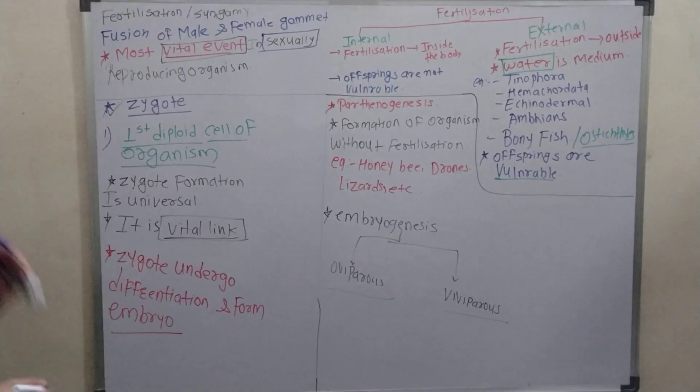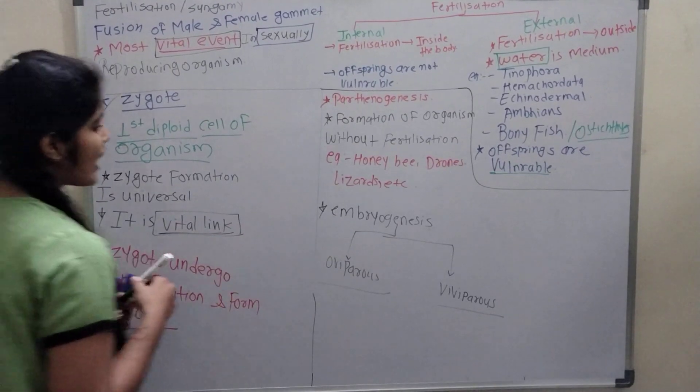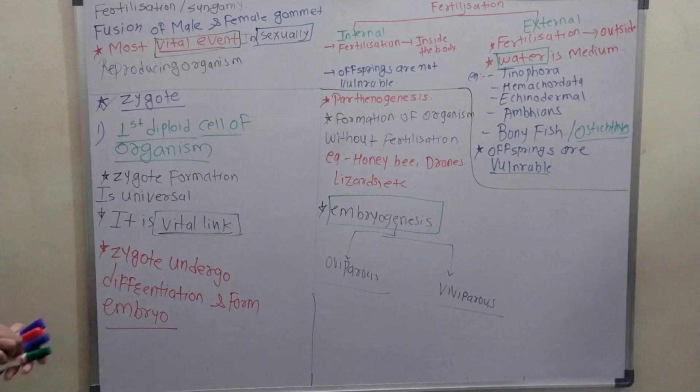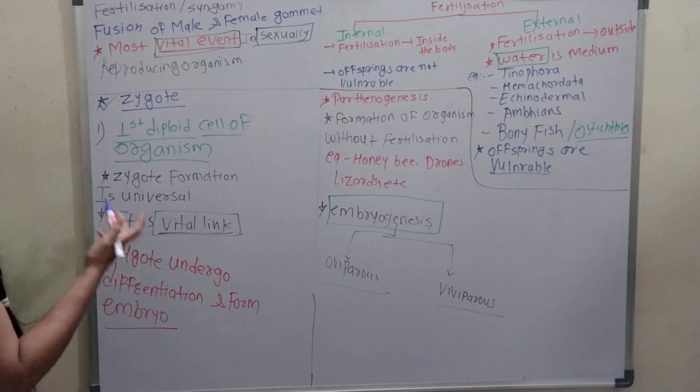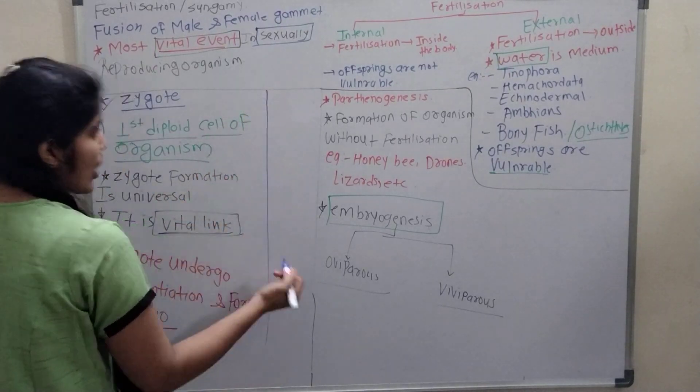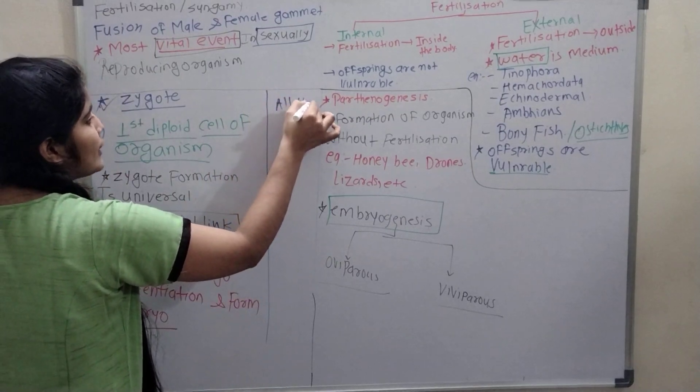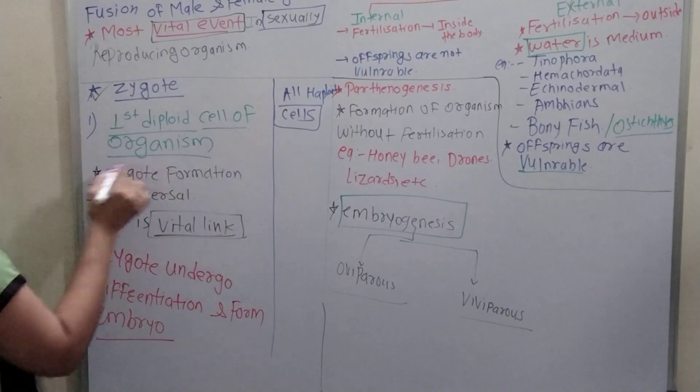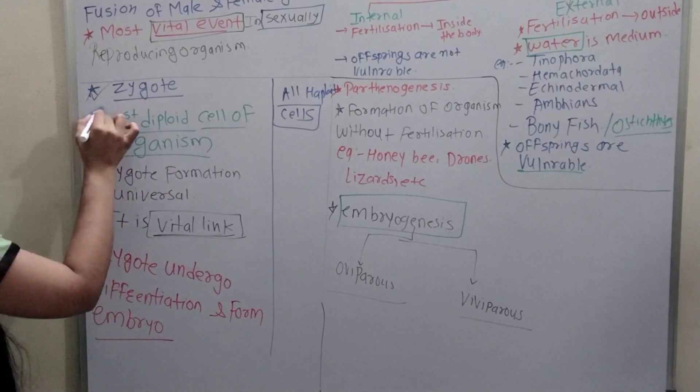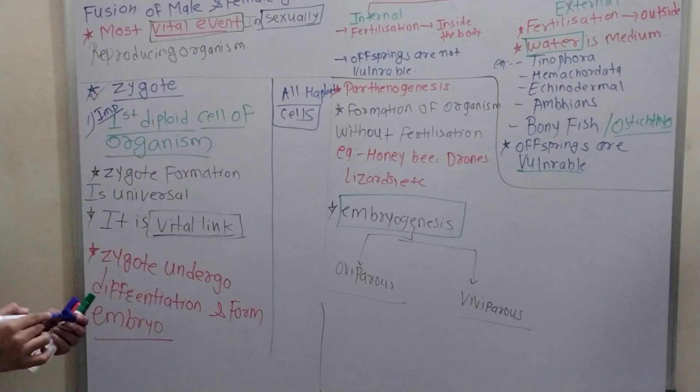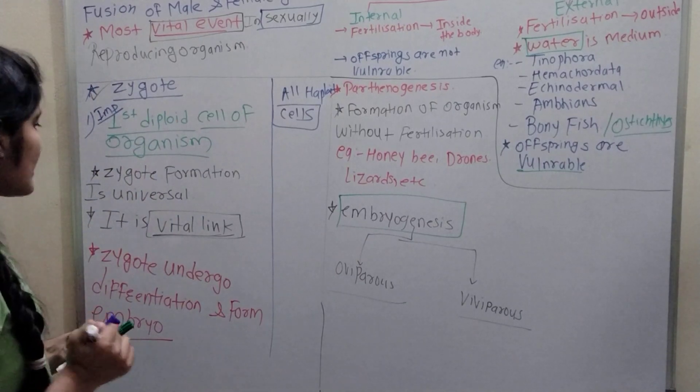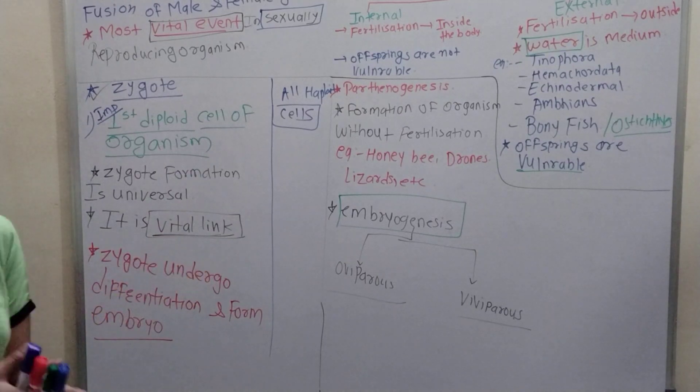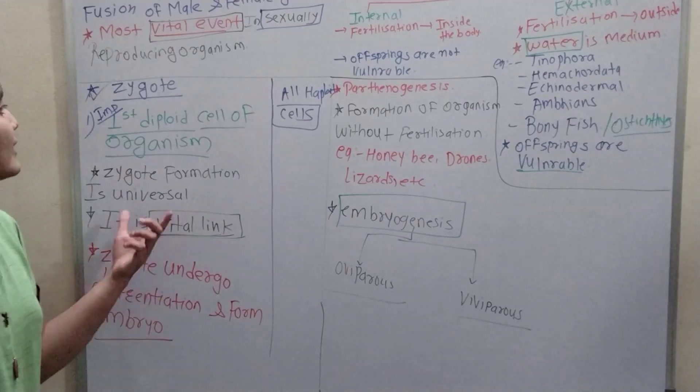The next event is zygote and embryogenesis. In zygote, it is the first diploid state. Up to that zygote, we have seen all haploid cells. But here, zygote is the first diploid cell of the organism. This is important. Zygote formation is universal. Then it is the vital link. This is also important. Zygote undergoes differentiation and forms the embryo. Then embryogenesis.